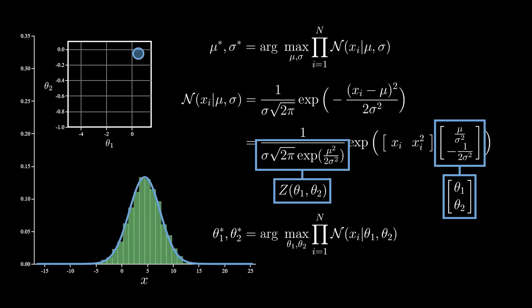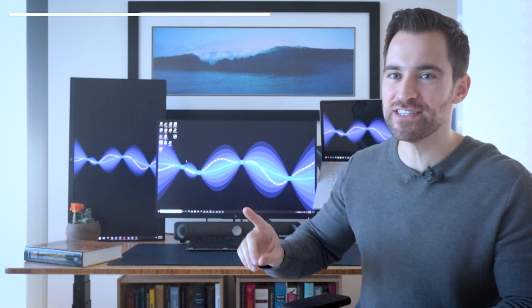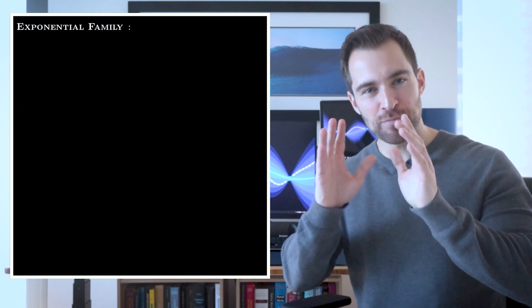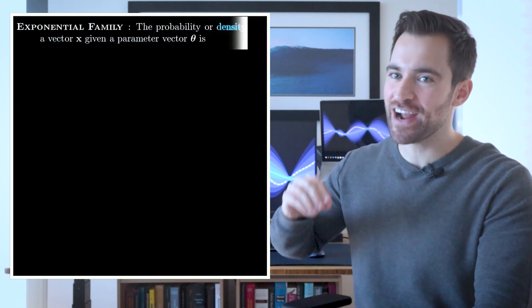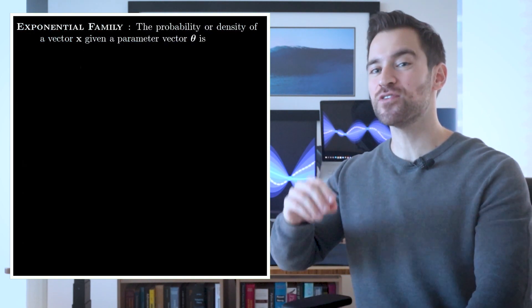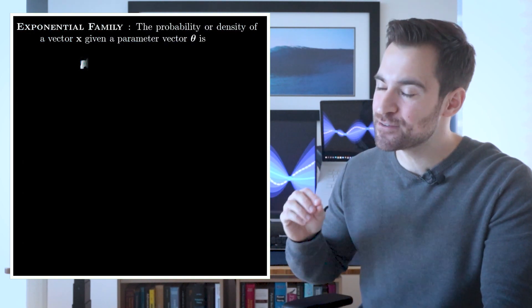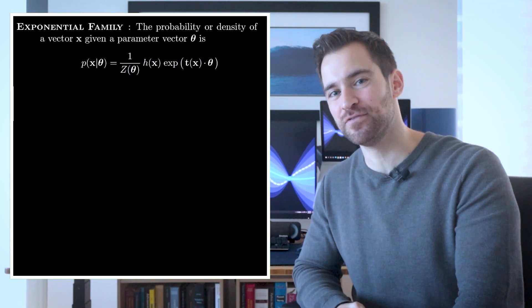At this point, I should point out why rewriting things this way is interesting. It's because nearly every distribution you've seen can be reworked into this form. So, from this perspective, we can find the best fit parameters, but for a huge range of distributions. That said, let's write out that form explicitly in all its generalized glory. Ready? Okay. If the probability or density of a vector x given a parameter vector theta can be written in this form, then it's within the exponential family.